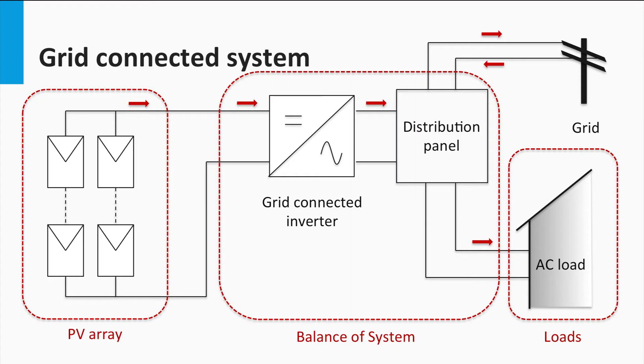In this grid-connected PV system schematic, you see the various system components. Let's walk through the system to see the efficiency loss at each stage. I will suppose some efficiency values for each component so that we can get a rough estimate of how the system efficiency might look like.